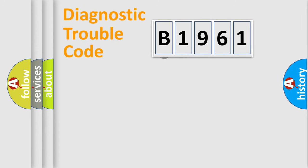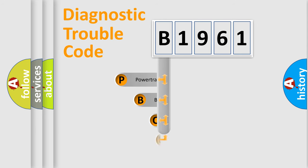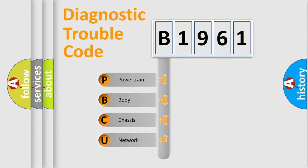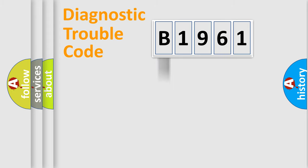Let's look at the history of diagnostic fault code composition according to the OBD2 protocol, which is unified for all automakers since 2000. We divide the electric system of the automobile into four basic units: Powertrain, Body, Chassis, and Network.